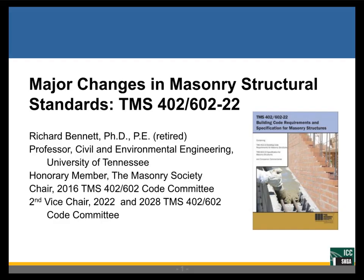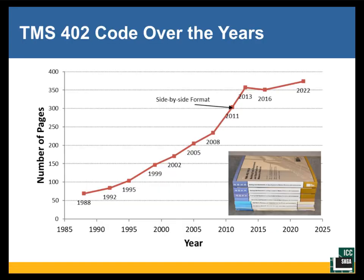I want to look at changes in the 2022 edition of TMS 402, the Masonry Society standard. I like starting with this slide to show pages versus the year of the code. As Maria mentioned, I was chair in 2016, and one of the biggest highlights of my career is that we produced a structural code with fewer pages than the previous edition. People ask if we used a smaller font — no, we did not.